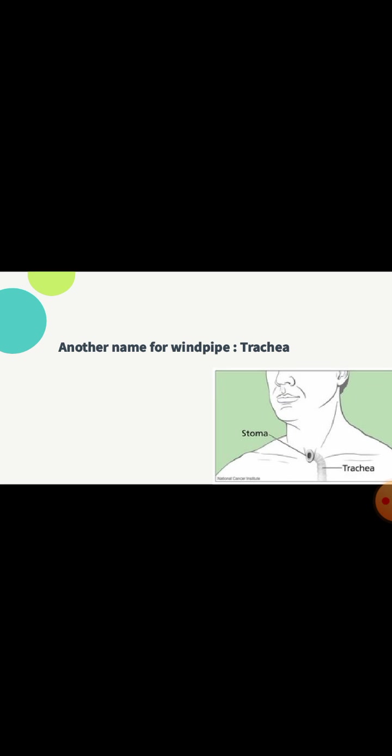Another name for windpipe — trachea. A muscle under the lungs that controls breathing — diaphragm. The two tubes that help air to reach the lungs — bronchi.